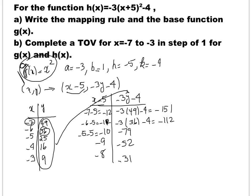So this tells us that, for instance, the point (negative 3, 9) on the base function is transformed to the point (negative 8, negative 31) on the transformed graph.